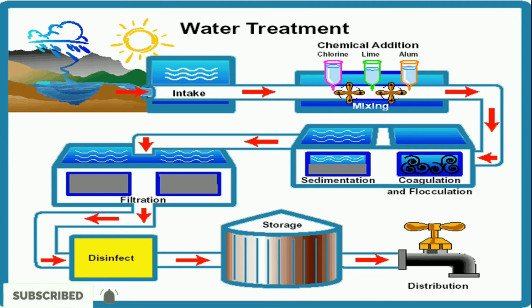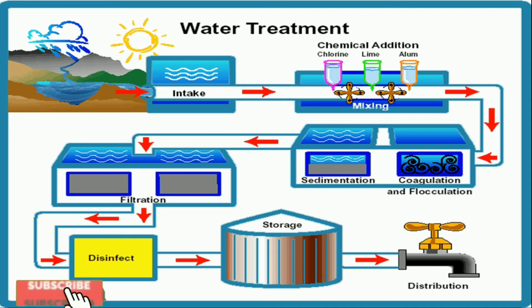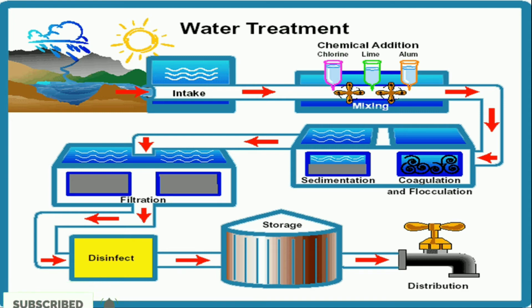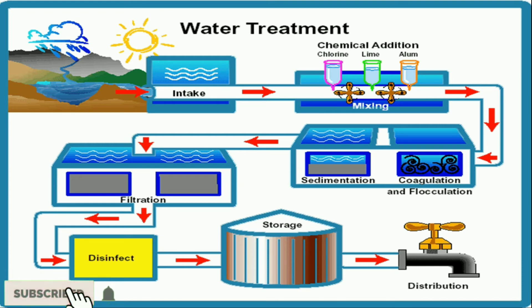The first disinfection method is by boiling — by boiling the water, we can kill microorganisms. The second one is ozonization. The third one is chlorination — we send chlorine gas into the water to kill the microorganisms present in it.